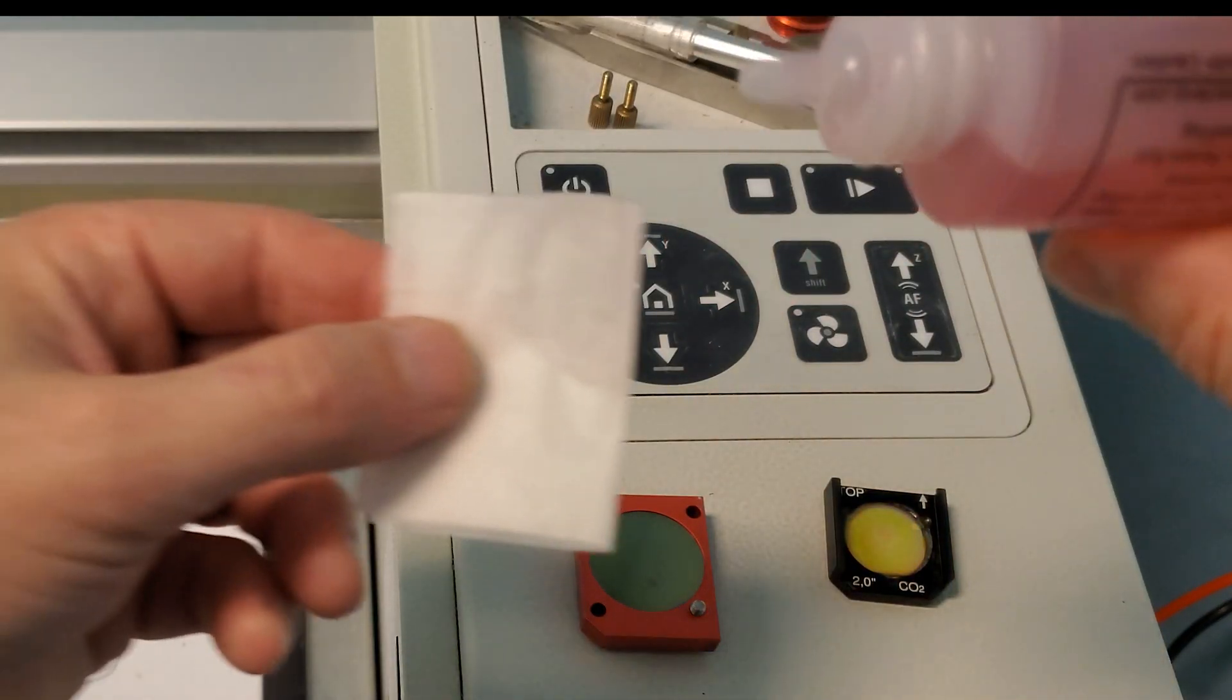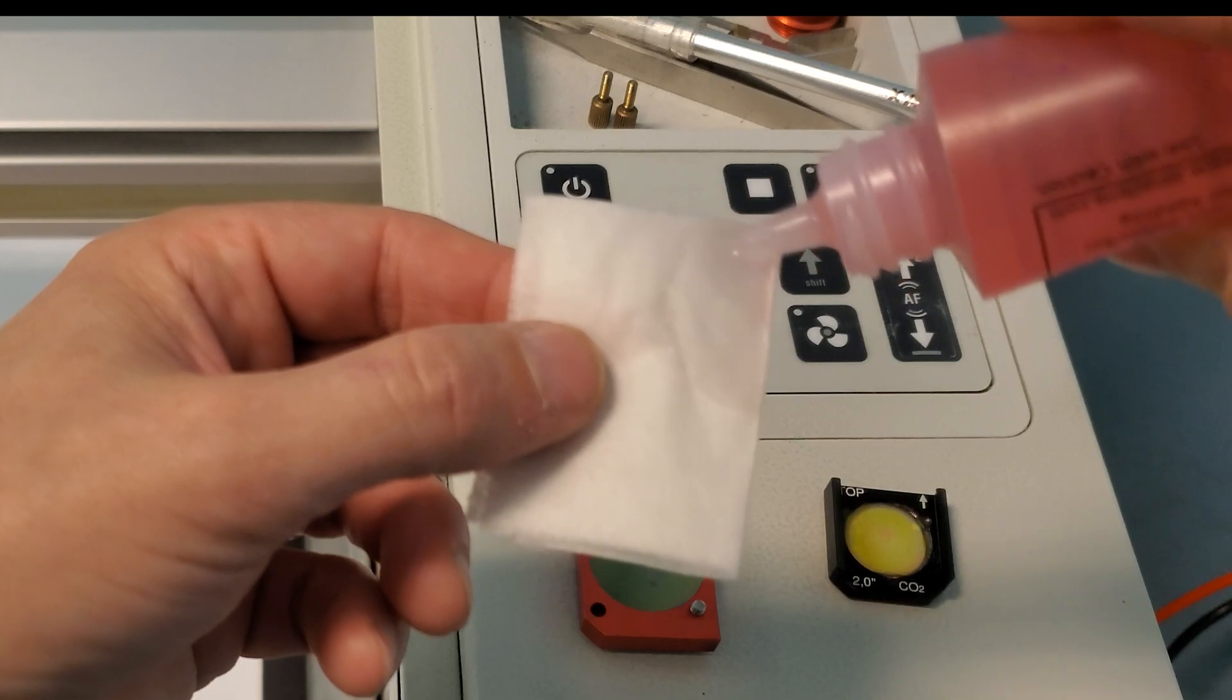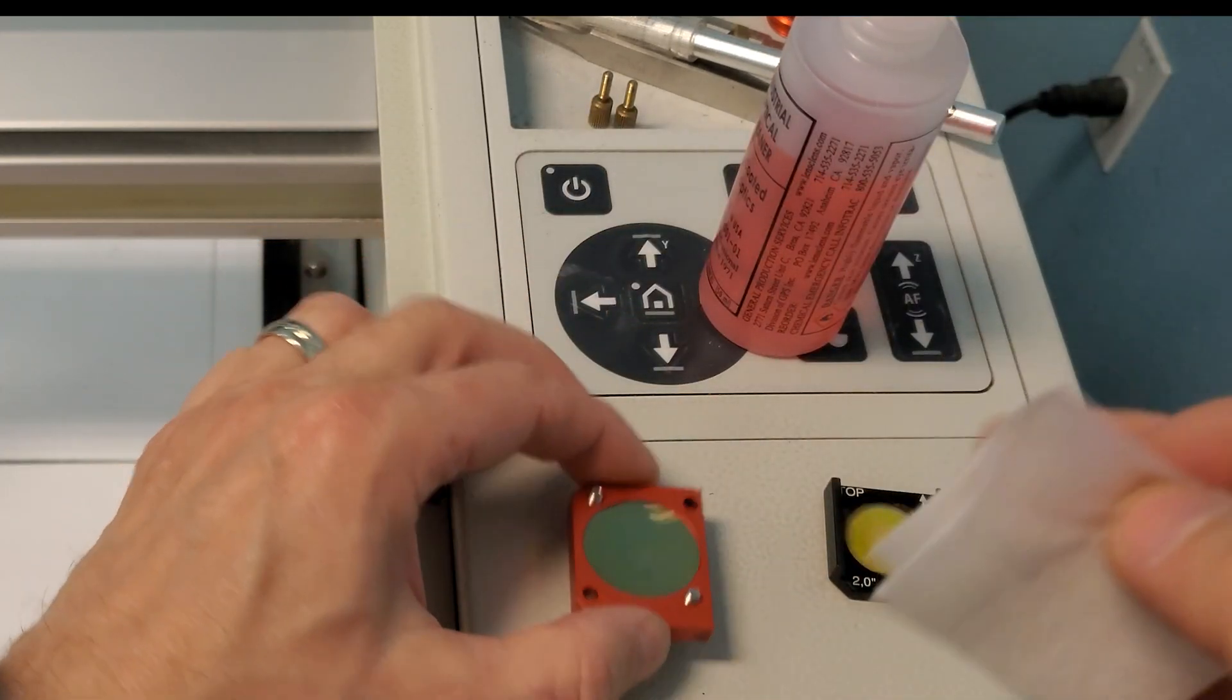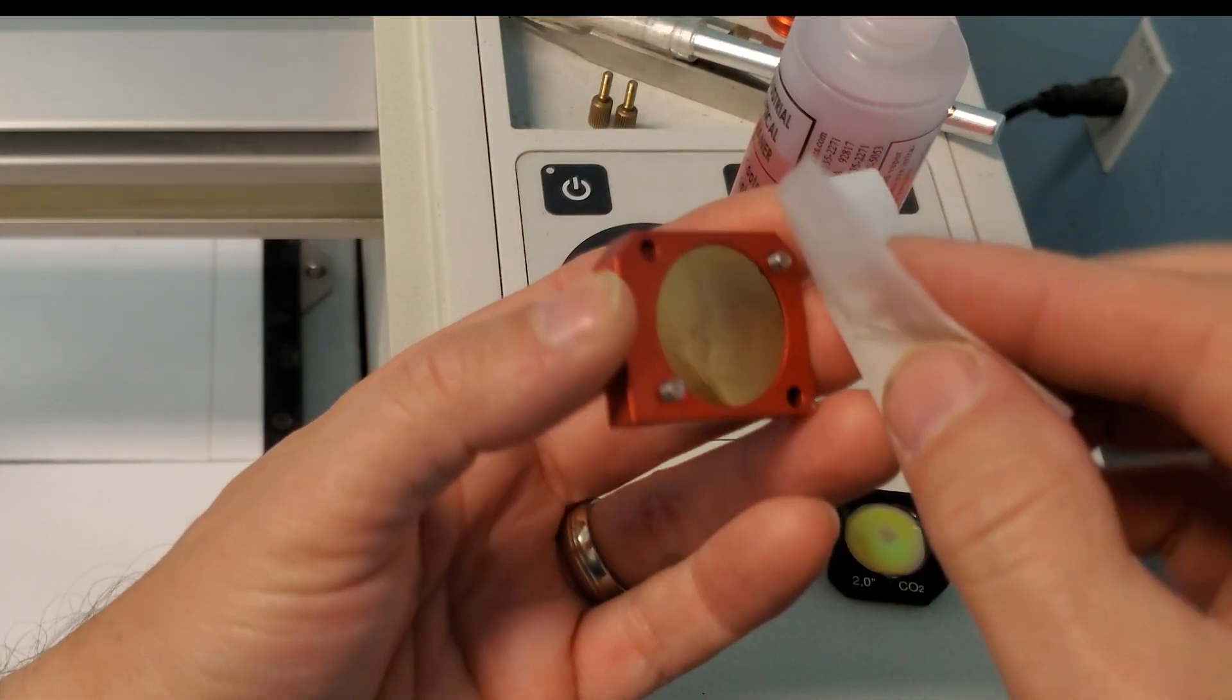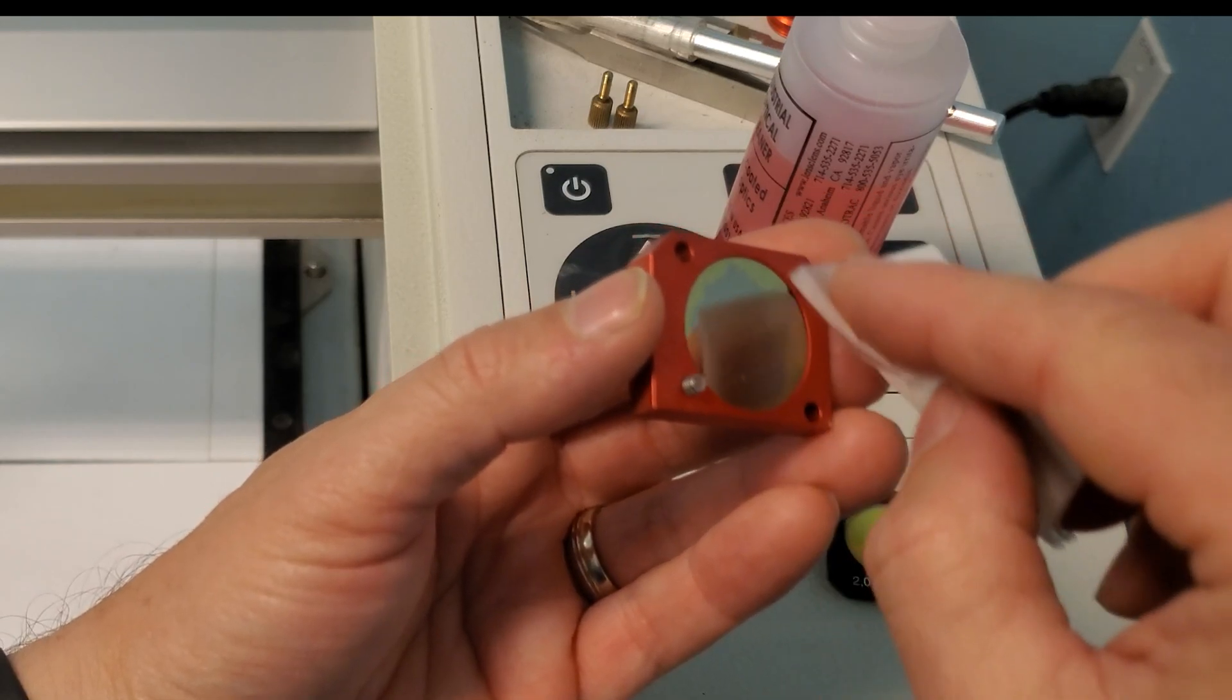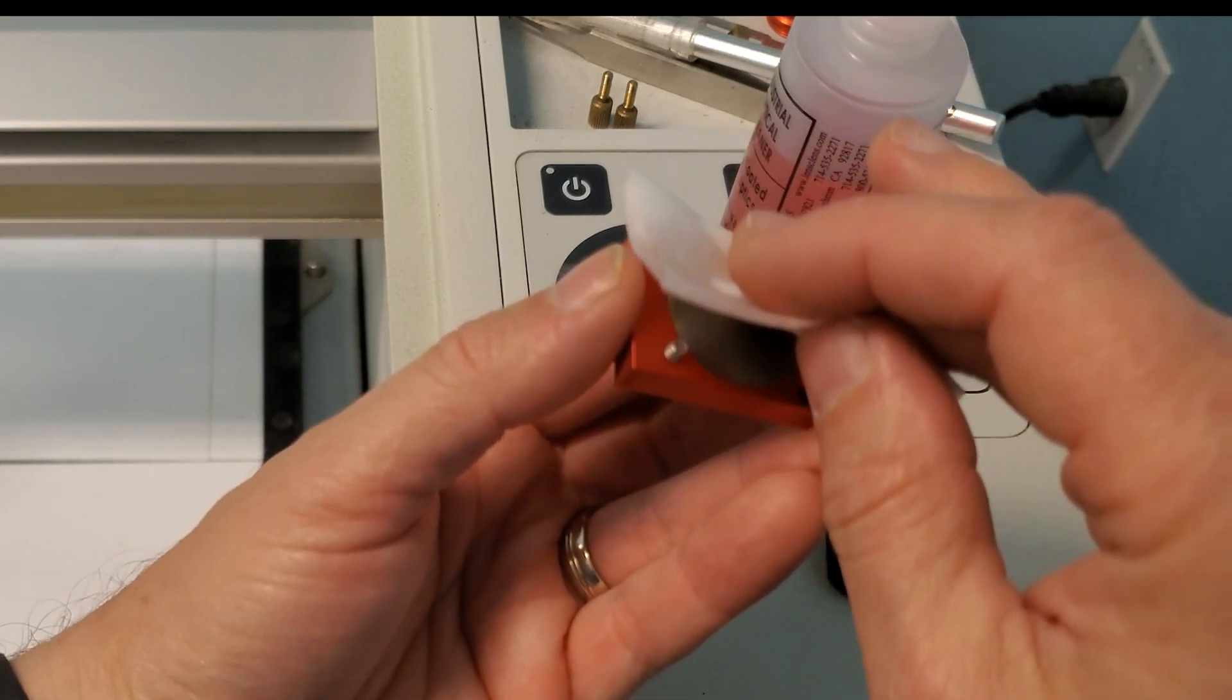I place enough lens cleaning solution on one corner to saturate it, and then lightly wipe it across the center of the lens or mirror I'm working on in one direction, and then quickly go back over it very gently with a dry corner. I use almost no pressure when wiping the cleaner on or when drying it.